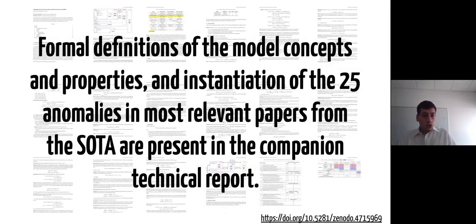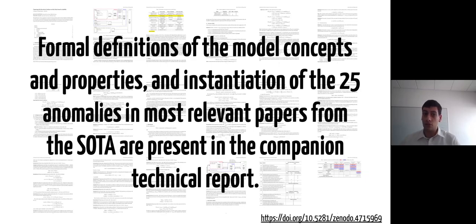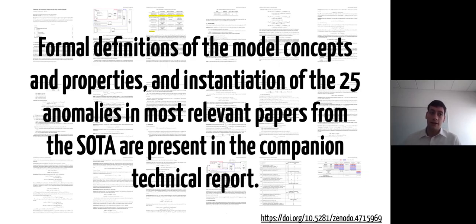The model has been formally defined along with a set of properties to express the anomalies — their definitions can be found in the published paper. We also instantiated 25 definitions of anomalies extracted from the main existing work on studying and formalizing inconsistencies in the Linux build system. All the instantiations are available in a companion technical report on Zenodo. I will now detail step by step the mechanism to build internal and external presence conditions and how they are used to identify dead anomalies.